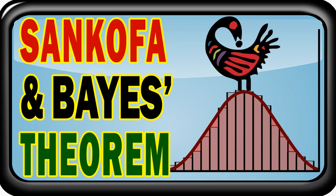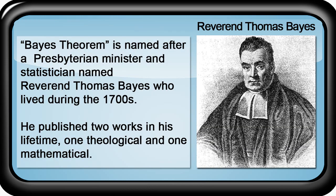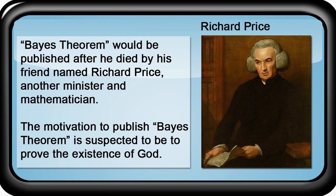Bayes' Theorem is named after the Reverend Thomas Bayes, a Presbyterian minister and statistician who lived during the 1700s, who only published two works in his lifetime — one theological and one mathematical. However, the theorem which he would become famous for would be published after he died by his friend Richard Price, another minister and mathematician, on his behalf.